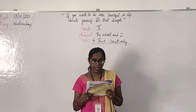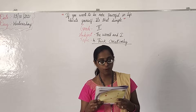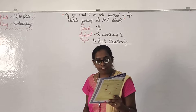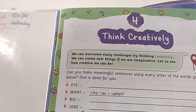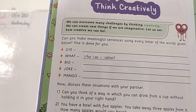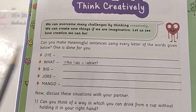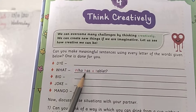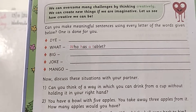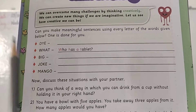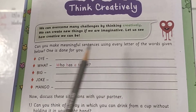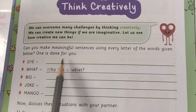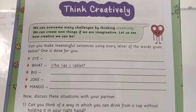Test, children. Can you make a meaningful sentence using every letter of the words given below? One is already done for you. They have given a few words here: D-Y-E, then W-H-A-T, B-I-G, J-O-K-E, M-A-N-G-O. One is already done — W for who, H for has, A for a tablet, T for tablet — like that they have made one sentence. You should use the first letter for one word, second letter for one word, third letter for one word, but you should make it into a meaningful sentence. The sentence should have meaning.